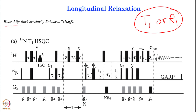If you look at the pulse sequence for longitudinal relaxation — T1 or R1 — this is the water flip-back sensitivity-enhanced T1 HSQC experiment. Water flip-back is required for suppressing water; in protein samples the protein concentration is typically a few hundred micromolar or up to one to two millimolar, but water concentration is very high at 55 molar, so we need to suppress it.